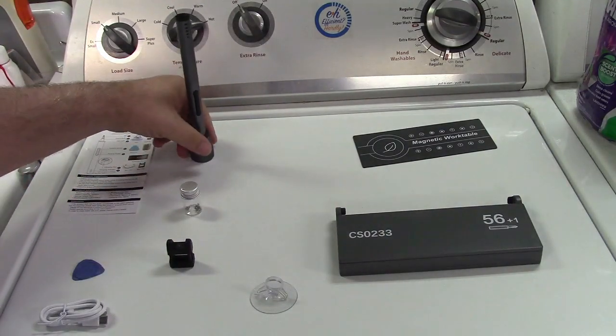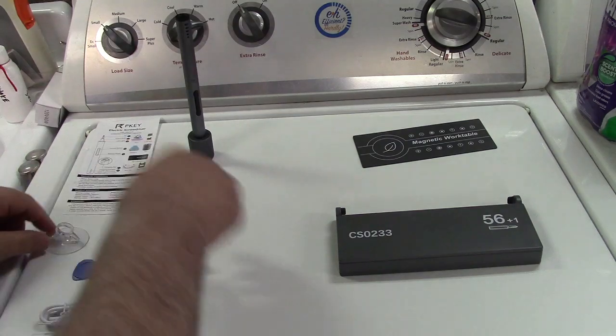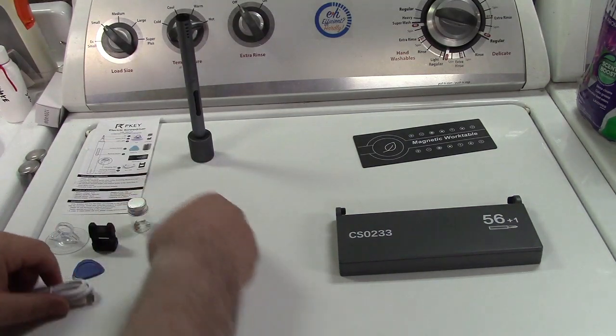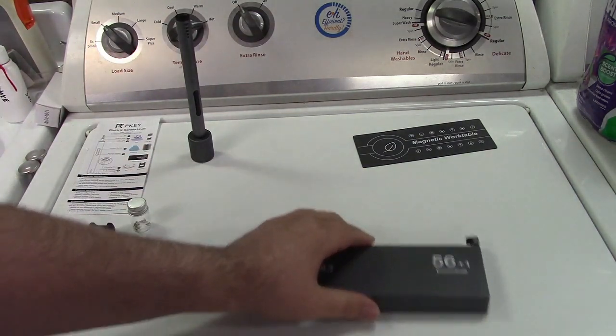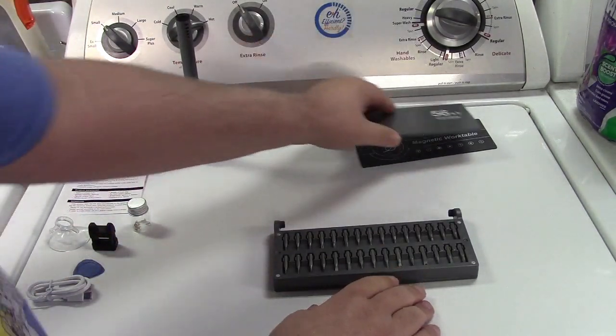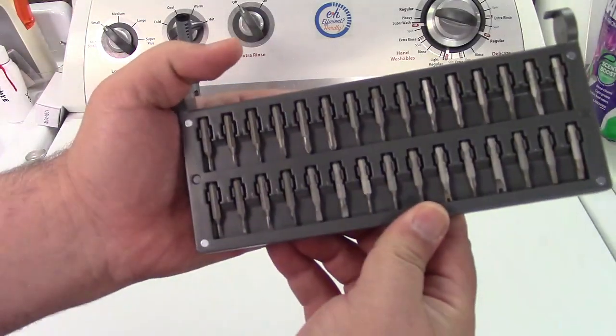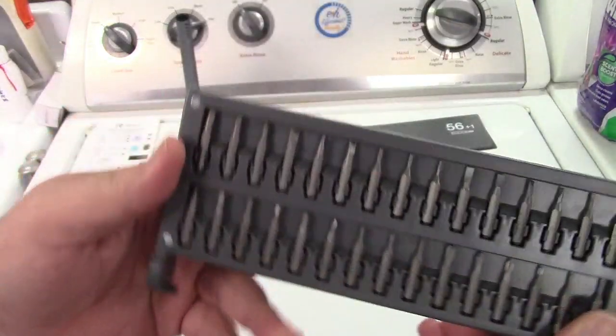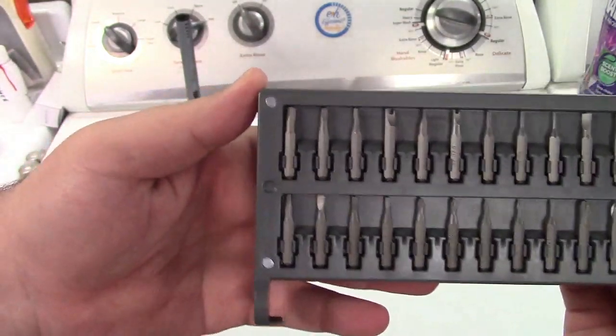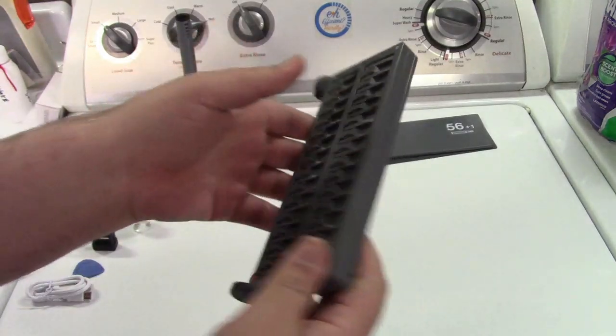Let's move that out of the way. We'll move everything else out of the way here, and I'll show you the bits that you get right over here. This is also magnetic. Cover just comes off. And you get a whole bunch of bits right over here that will fit the screwdriver. So there's Phillips, and flat, and hex, and torques, and all kinds of stuff like that.